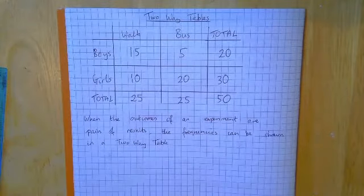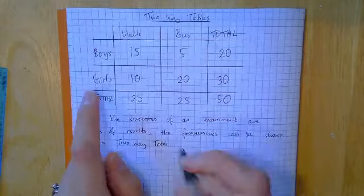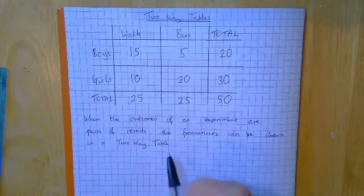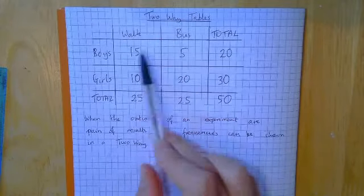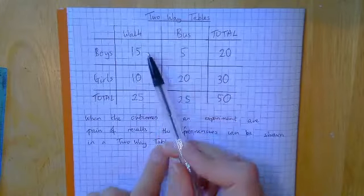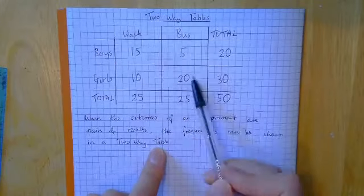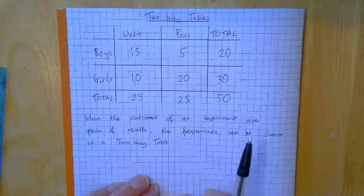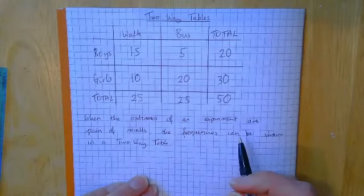So, like this experiment, we ask people if they were a boy or a girl and if they walked or got the bus. So one of the results was girl and bus. So our results come in pairs, and then we can write down the frequencies in our two-way table. So we never have anything in the two-way table apart from normal numbers like this, which we call the frequencies.